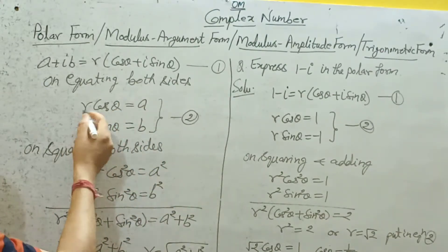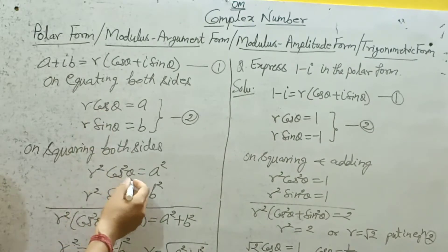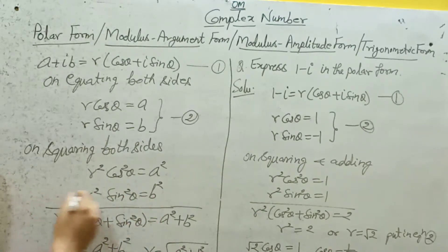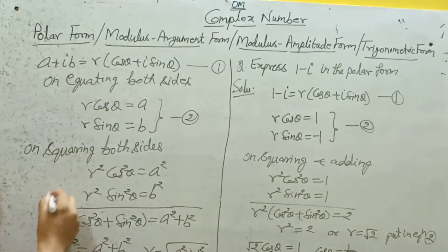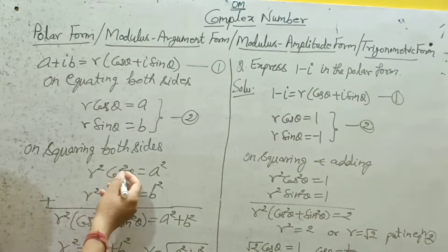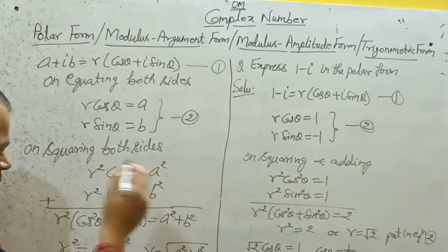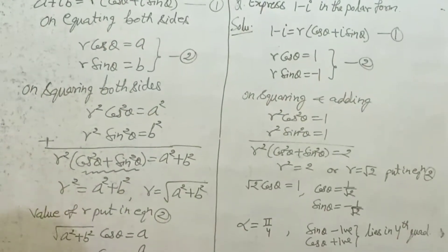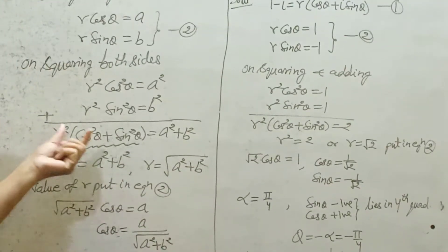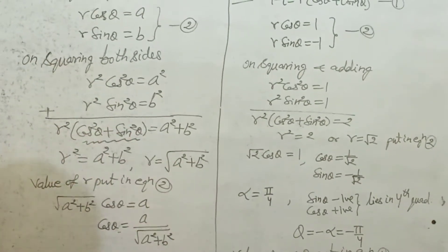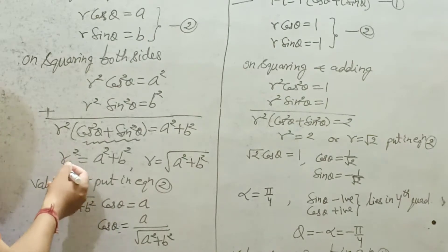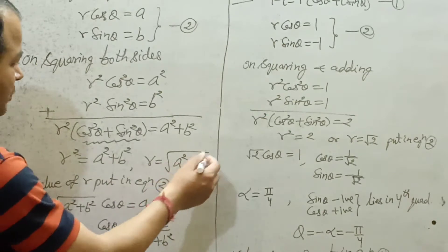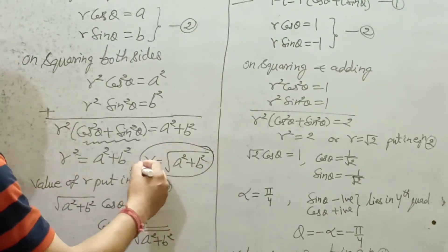On squaring both sides: R squared cos squared theta equals A squared, and R squared sine squared theta equals B squared. On adding, R squared times (cos squared theta plus sine squared theta) equals A squared plus B squared. Since cos squared theta plus sine squared theta equals 1 (trigonometric identity), we get R squared equals A squared plus B squared, or R equals under root of A squared plus B squared. This is known as the modulus.